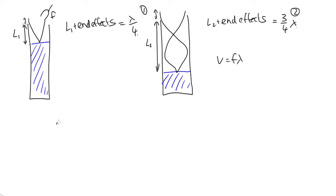So let's do equation 2 minus equation 1. So we'll have L2 plus end effects minus L1 plus end effects. So the end effects cancel out. We have L2 minus L1 is equal to three quarters lambda minus lambda over 4. So this is equal to lambda over 2.